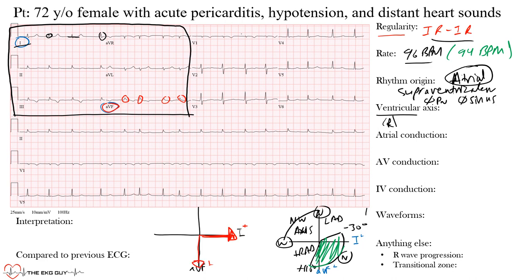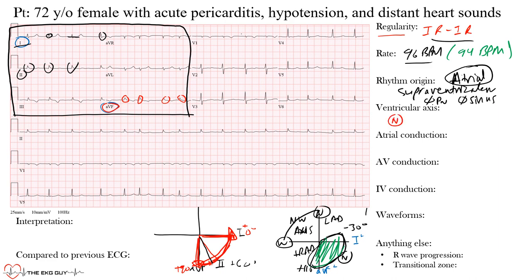To confirm, lead II sits at positive 60 degrees — also mostly positive. Our axis lies somewhere between zero and positive 90 degrees. Lead II is mostly positive; aVL is mostly negative. The actual axis was positive 70 degrees, which lands right in that region — within normal limits. So we have a normal ventricular axis at positive 70 degrees.